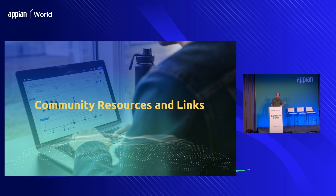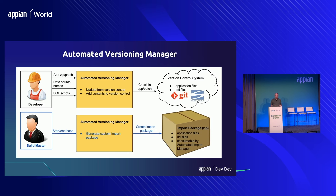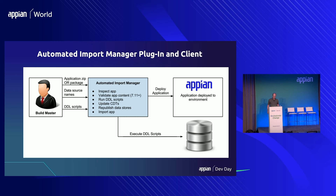We're getting to the tail end — let's talk about a few community application deployment utilities. If you don't have any versioning at all and you're not using Azure DevOps, we have the Automated Versioning Manager — there's lots of good information on our community site. There's also the Automated Import Manager plug-in and client — another utility that can be used. These are all in the Appian Community App Market, so you can download them from there.